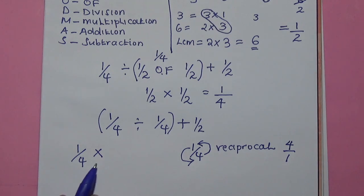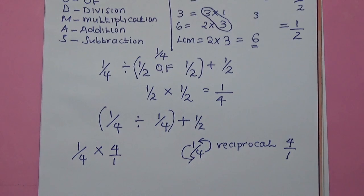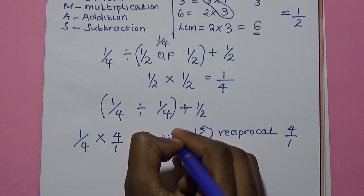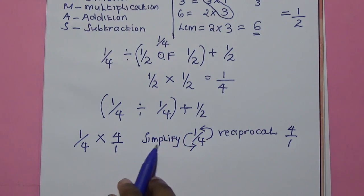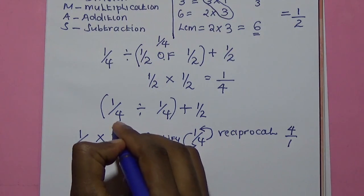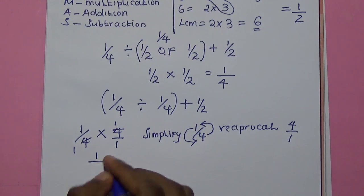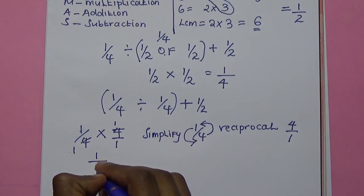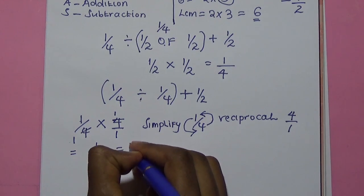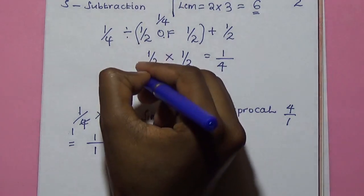So it will be 1 over 4 multiplied by 4 over 1. We simplify by cancelling out the 4s. We have 1 times 1 is 1, over 1 times 1 is 1. So we get 1 over 1, which is the same as 1. Therefore, a quarter divided by a quarter is 1.